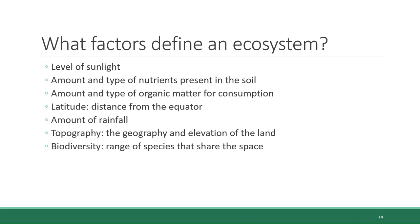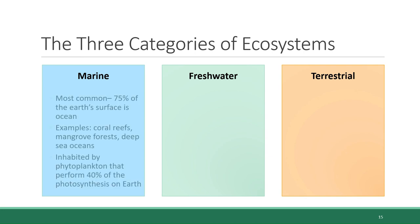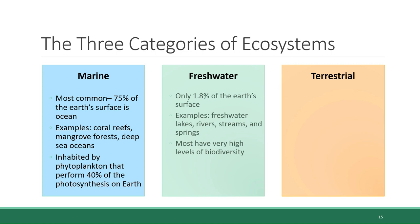As you can imagine, depending on these characteristics, ecosystems will look quite different from each other. There are three very broad categories into which all ecosystems can be sorted: marine, or in other words ocean ecosystems; freshwater ecosystems; and terrestrial, or land-based ecosystems.